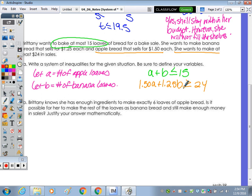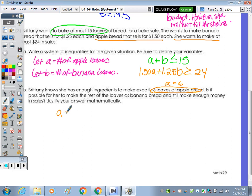Part B, Brittany knows that she has enough ingredients to make six loaves of apple bread. So we know that A equals six. So with the A plus B, that goes with how many she wants to bake. If we know she's going to make six, that means she's going to bake how many banana? Nine. It can be equal to nine, right? So we're good. It didn't come out to be a decimal.